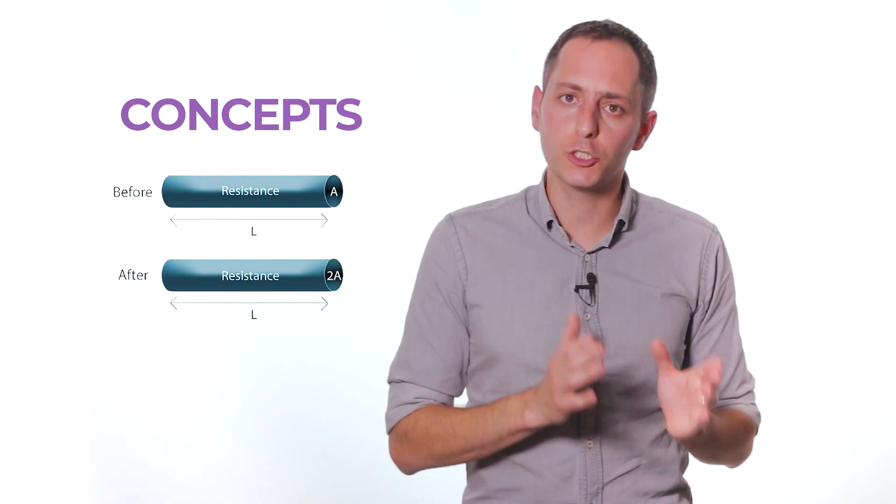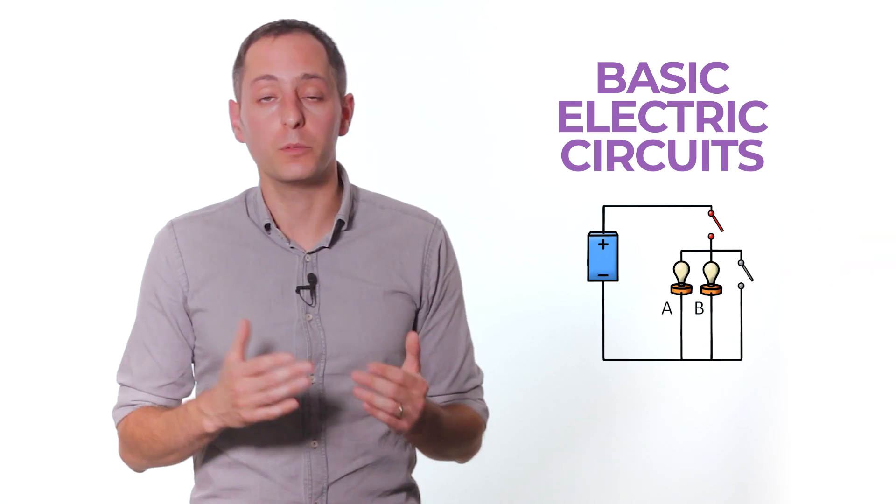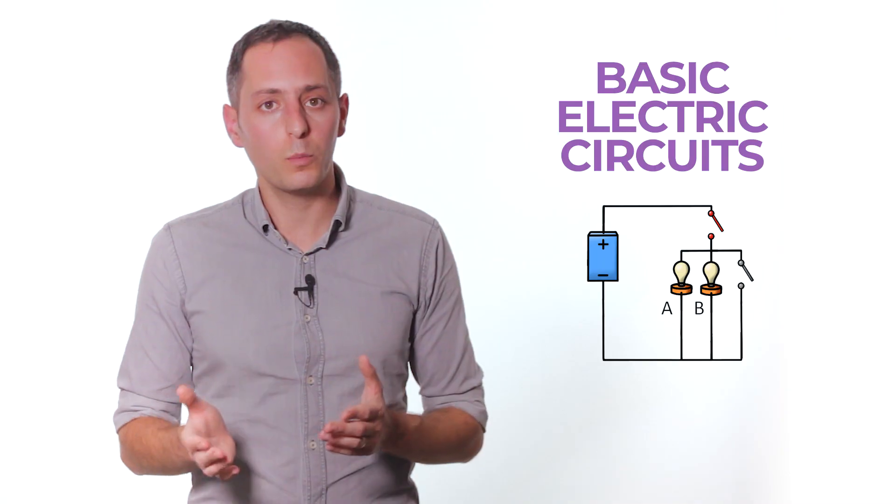Electricity is usually the smaller part of the test. It includes three main subtopics. Concepts are questions that deal with the theoretical basics of electricity, such as measurement units and Ohm's law. Basic electric circuits will usually show an electric circuit and ask you whether the circuit or certain parts of it is closed or open.